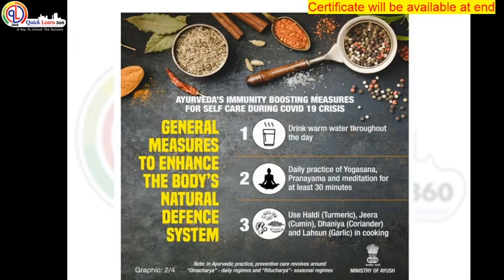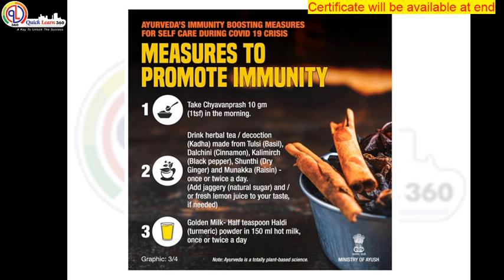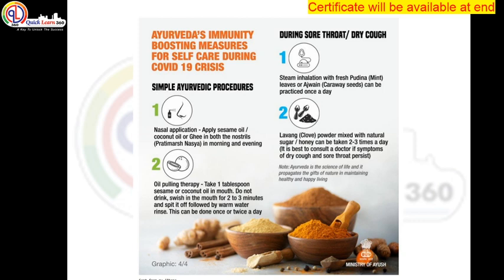As per the Ayush guidelines — stay home, stay safe. These are some measures to improve your immunity: drink warm water throughout the day, practice yoga daily for at least 30 minutes, and use turmeric (Haldi), cumin, coriander (Dhaniya), and garlic (Lasson) in your cooking. For improving immunity, you can take Chyawanprash, Haldi tea, or golden milk with half a teaspoon of Haldi. Some other extra preventions given by Ayush: for sore throat, steam inhalation with fresh Pudina leaves or Ajwain can be practiced once a day.